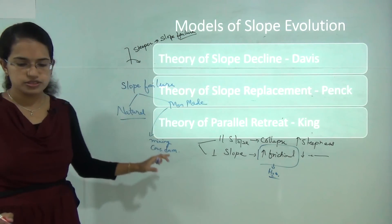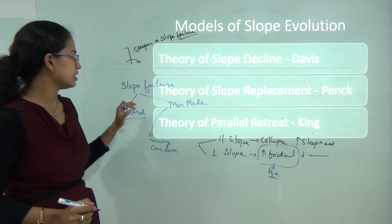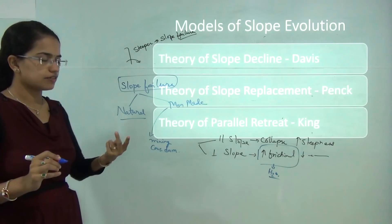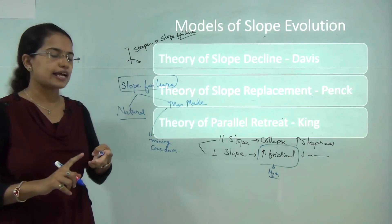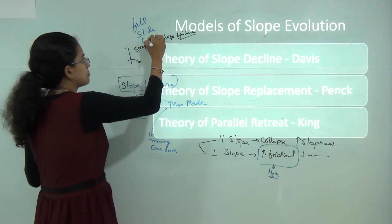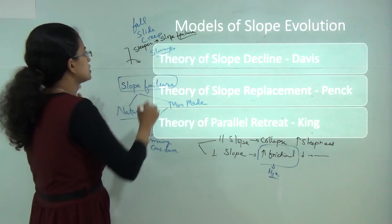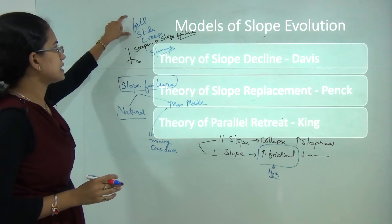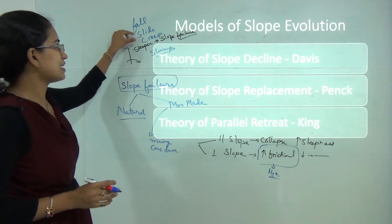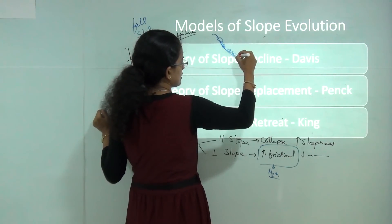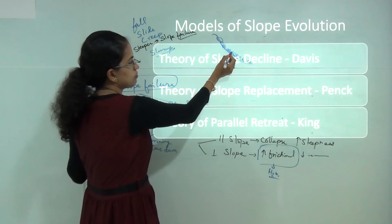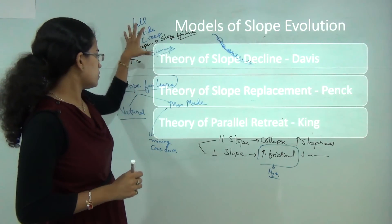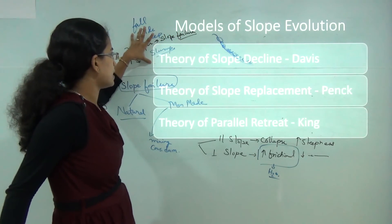The processes that govern slope failure will be covered under mass wasting. In mass wasting, we talk about four basic terms: fall, slide, creep, and slump. These terms are used with rocks and muds. Rock fall refers to particles of rock falling; rock slide is sliding of particles along the slope to the bottom; creeping is a slower movement than sliding; and slump is a movement where material flows together. These will be covered in detail under landslides and mass wasting.